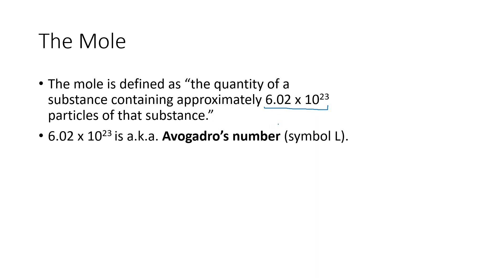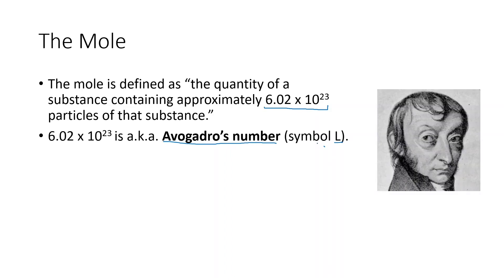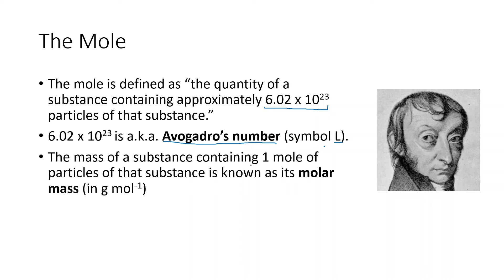This number has a fancy name as well — it's called Avogadro's number, symbolized by L. This cool dude was called Avogadro, and he came up with this idea. The mass of a substance containing one mole, or 6.02 × 10²³ particles, of a particular substance is known as its molar mass, and this is in grams per mole.